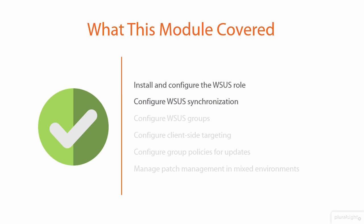We also took a look at groups and how a couple of different groups are necessary to ensure you get patches out in a way that tests them against the different use cases that may exist in your environment — making sure first that the patch doesn't destroy everything, also making sure that it doesn't conflict with any of your applications, and then once you're comfortable, deploying it out to the rest of the computers in your organization. We talked about client-side targeting and how group policy can make that process relatively easy, as well as the other group policies that ensure updates get delivered in the way that you see fit.